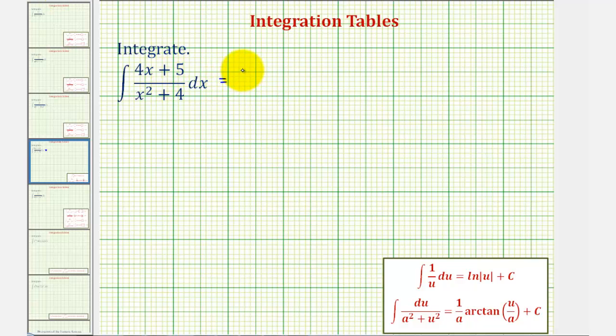This is equal to the integral of four x divided by the quantity x squared plus four plus the integral of five divided by the quantity x squared plus four.